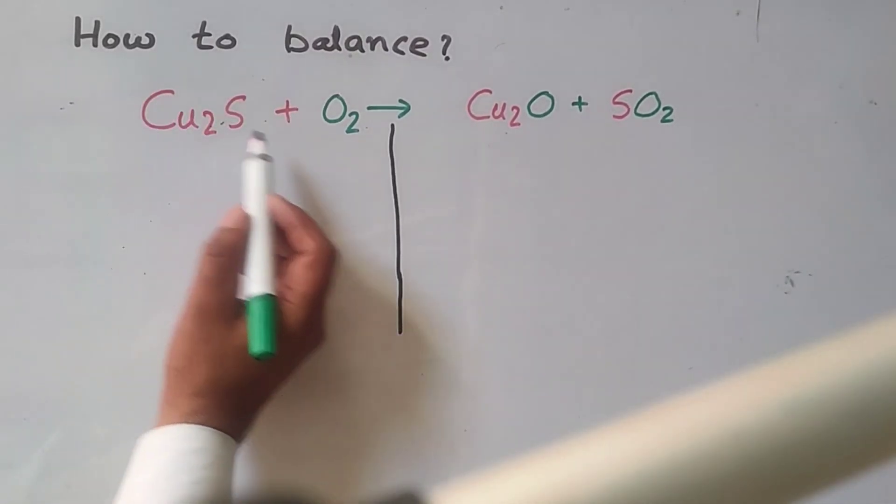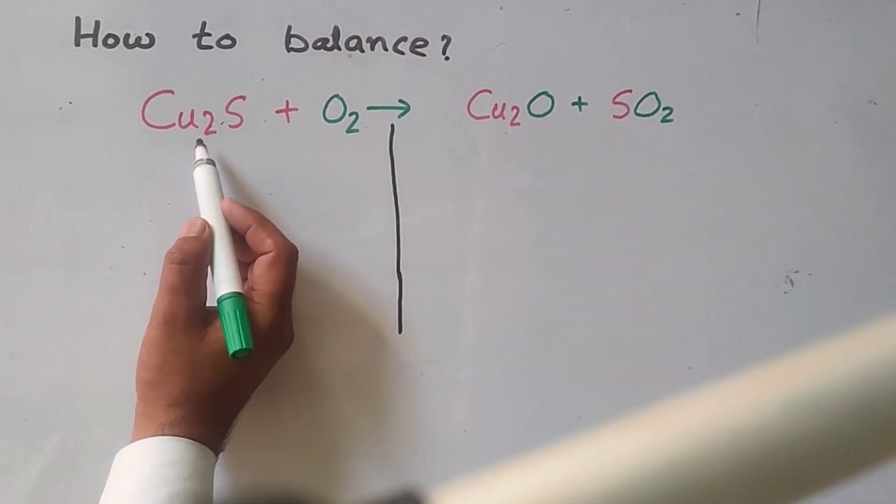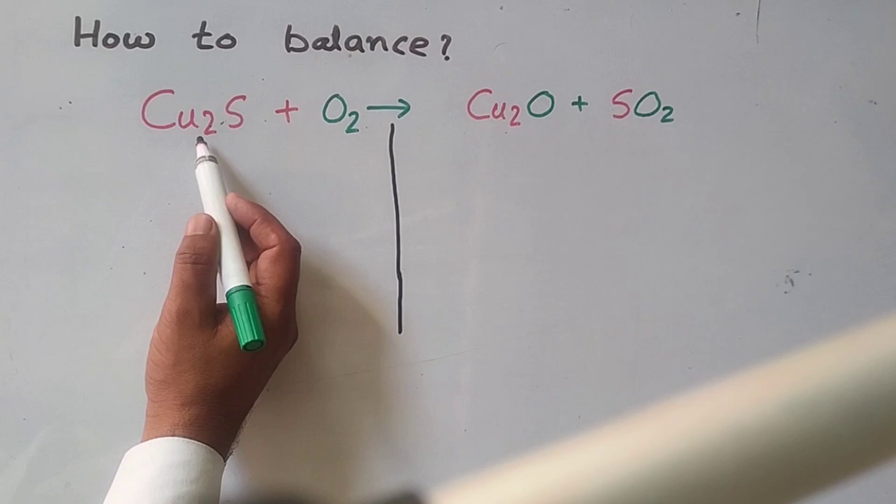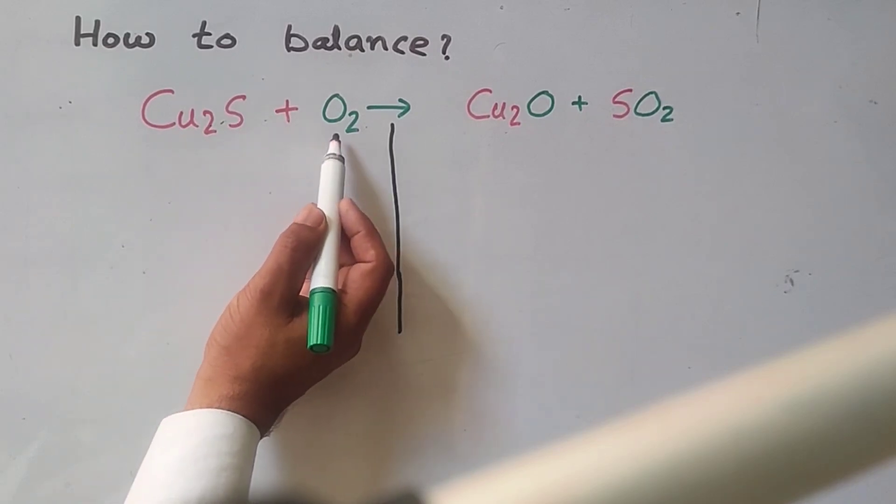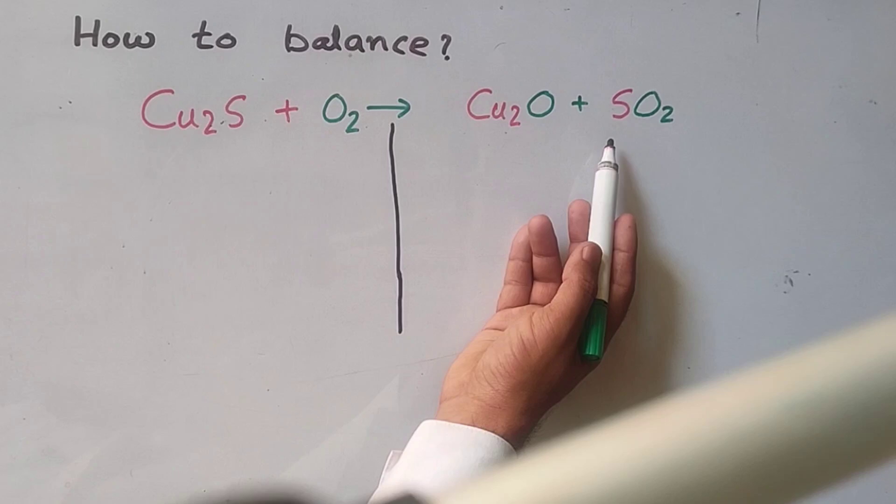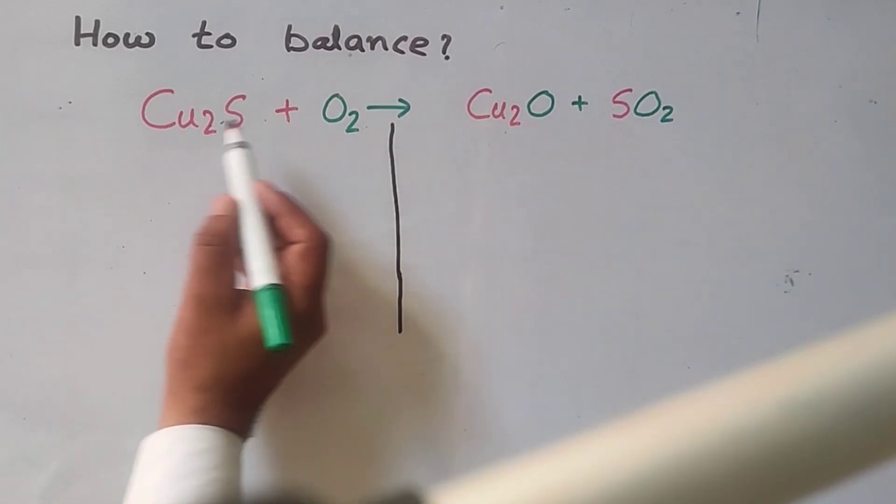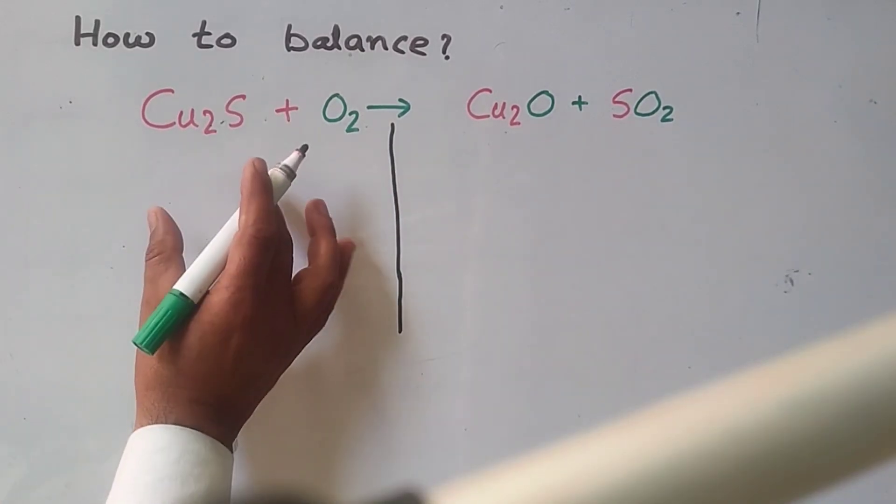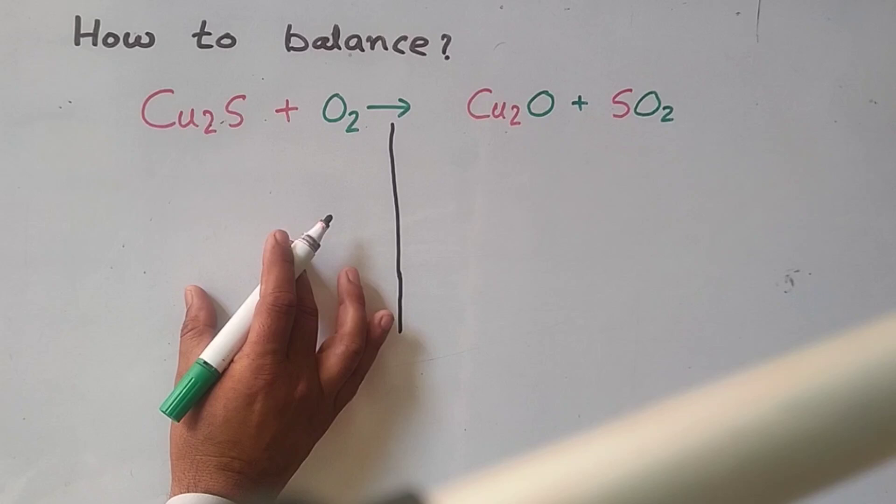How to balance this chemical equation? In this chemical equation, Cu2S reacts with oxygen and forms Cu2O plus sulfur dioxide. To balance this equation, we write the number of atoms of each element.